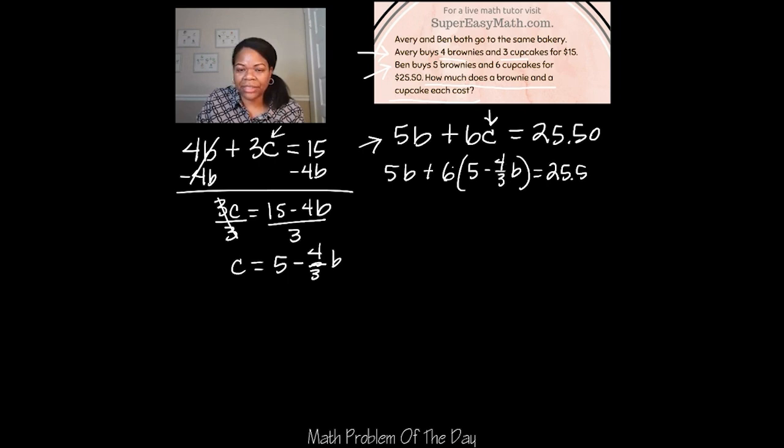24 over 3 equals 8. So this is 5B plus 30 minus 8B equals 25.5. Now I can simplify terms and I can see I got a 5B and I got a minus 8B, so that equals minus 3B plus 30 equals 25.5. Now I can subtract this 30 from both sides. Get rid of that.